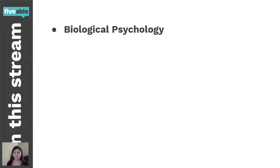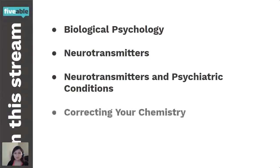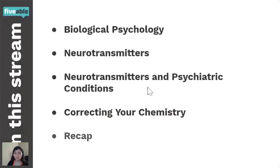In this stream, we'll have a bunch of different discussions about biological psychology, neurotransmitters, neurotransmitters and psychiatric conditions — kind of the links and causes — how to correct your brain's chemistry using neurotransmitters, and then just a brief recap.